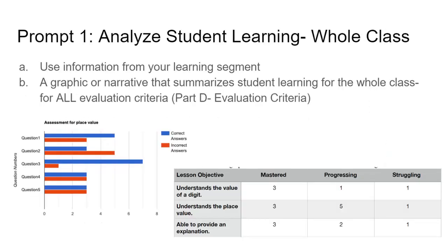Prompt 1 is an analysis of your whole class's learning. Part A is asking you to identify the learning objectives. You're going to get that information from your learning segment, but it should be specifically based on your learning segment as well as the assessment. The assessment might not have touched on every objective that you taught, so be sure that it is specific to your assessment that you gave your students.